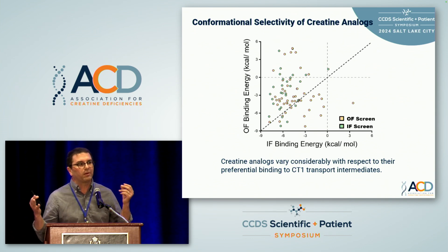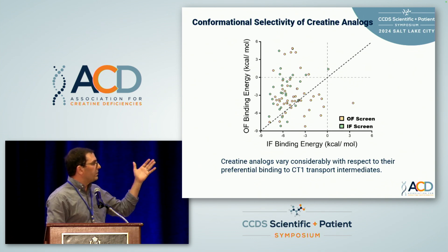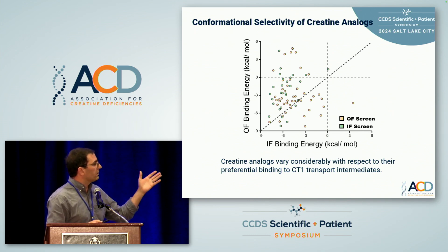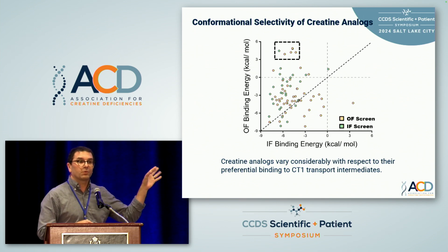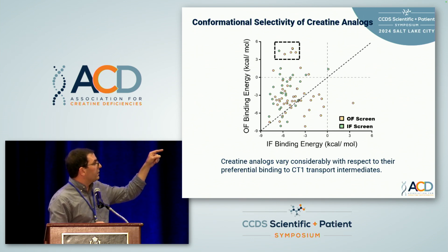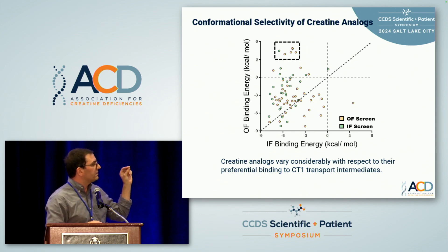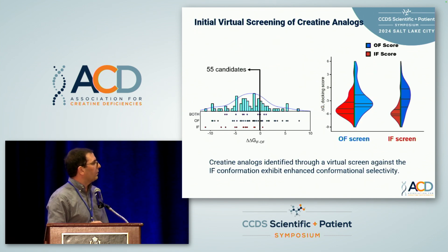In our initial virtual screen we got about 50 compounds with good bias scores. On the plot, we have calculated binding free energy for the inward facing state versus the outward facing state. We want compounds in the quadrant where they bind weakly to the outward facing state but very favorably to the inward facing state — and we don't want compounds that bind very well to the outward facing state. That's where we left off two years ago.